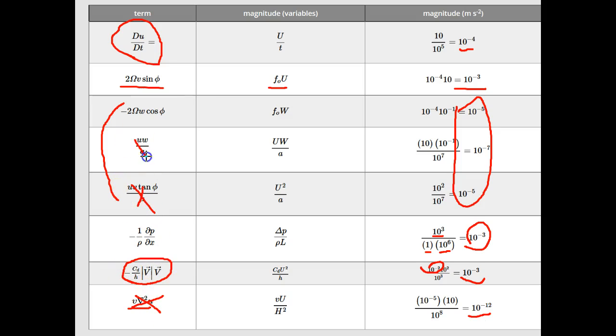So when we look at the terms we have, we see that we have, away from the boundary layer, we have two terms that count. That is, we have the Coriolis term, and we have the pressure gradient term. And those are the only two terms that we need to keep.